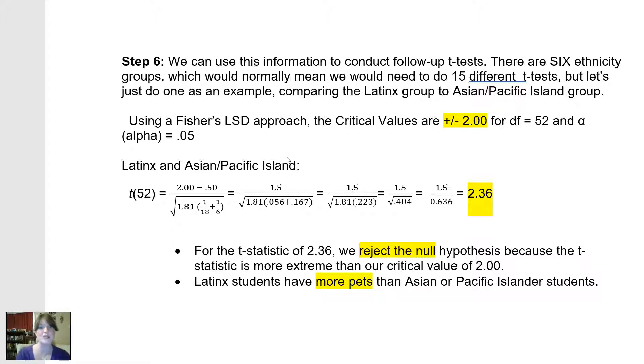So how do we use PSPP to conduct a follow-up t-test? Well, there were six different ethnicity groups. So in actuality, if I wanted to compare all six groups to all the other groups, I'll actually have to do 15 different t-tests. But I'm not going to do that. I'm just going to choose two groups and conduct an independent samples t-test on the groups. So here I have chosen the Latinx and Asian and Pacific Islander ethnicity groups.